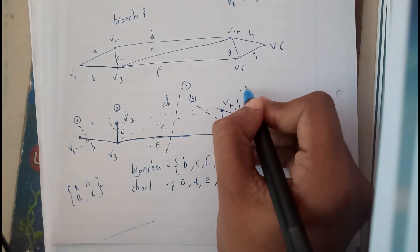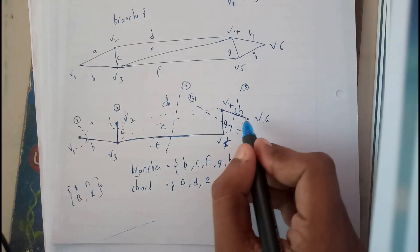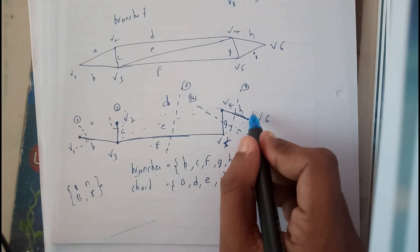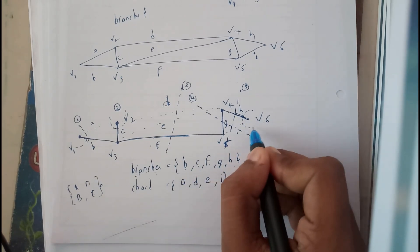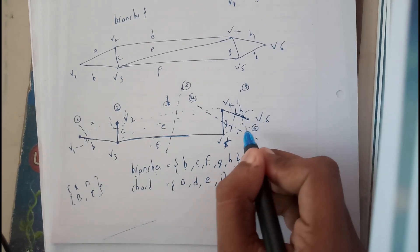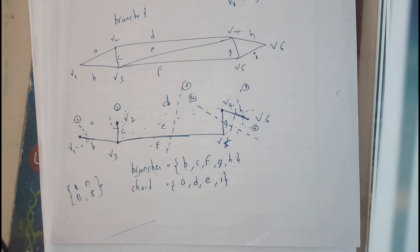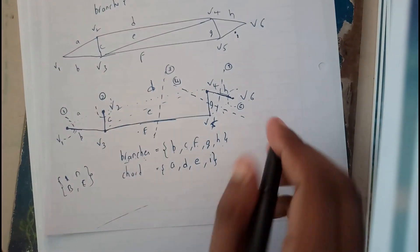For V6, we can directly draw like this as there is only a single branch. This will be the sixth one. Now we'll be writing them in terms of sets.